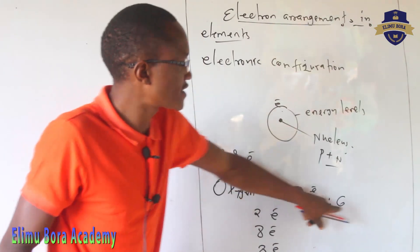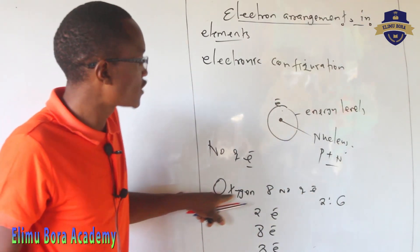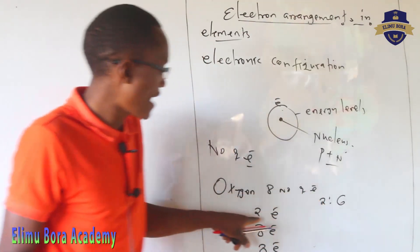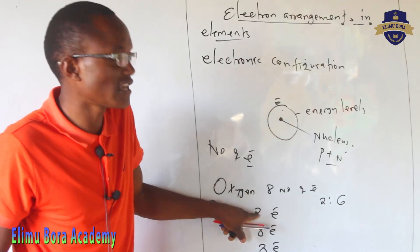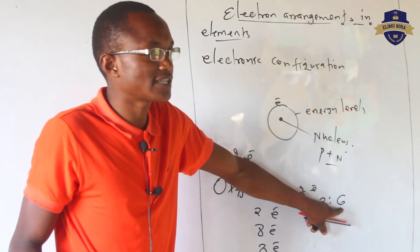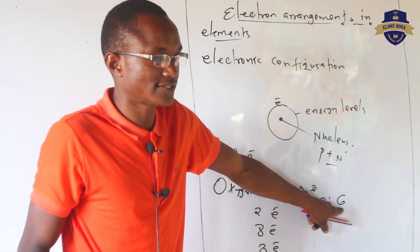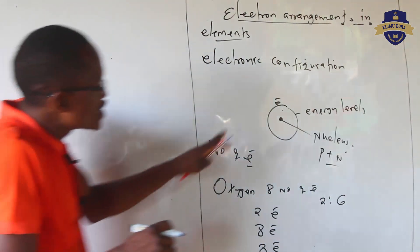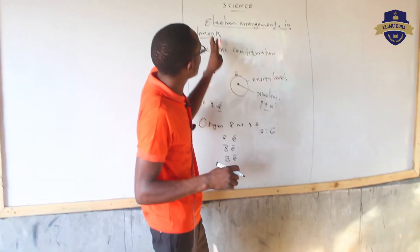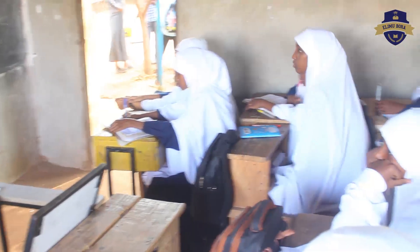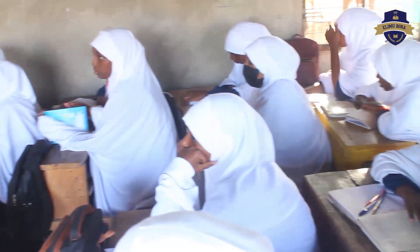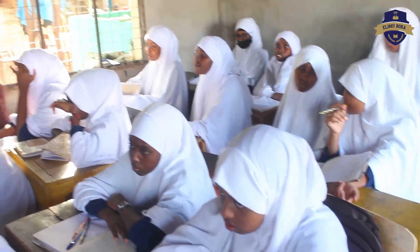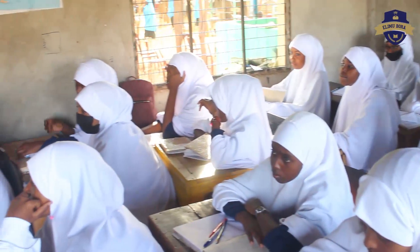2:6 means the total number of electrons present in oxygen is eight — the first energy level carries a maximum of two, and the next energy level carries six. So when drawing the structures, what we call the electron arrangement, we represent how they behave in an atom. For oxygen we have 2:6, which makes a total of eight.